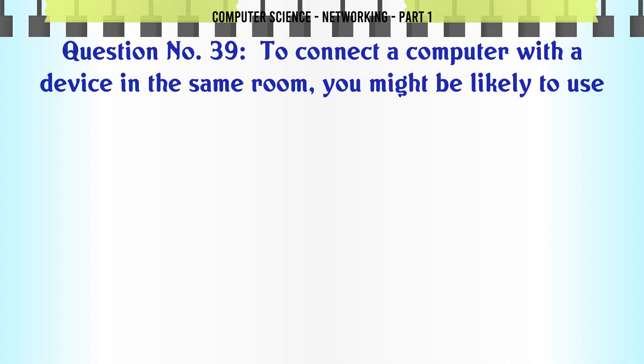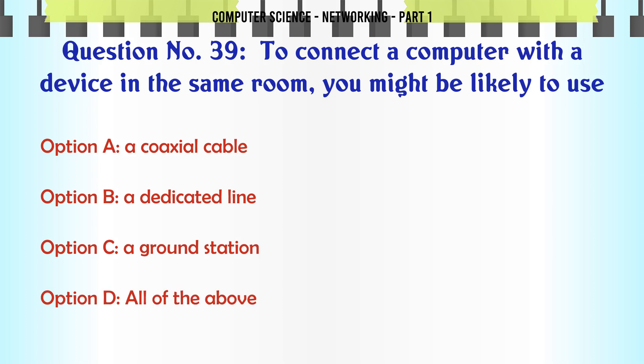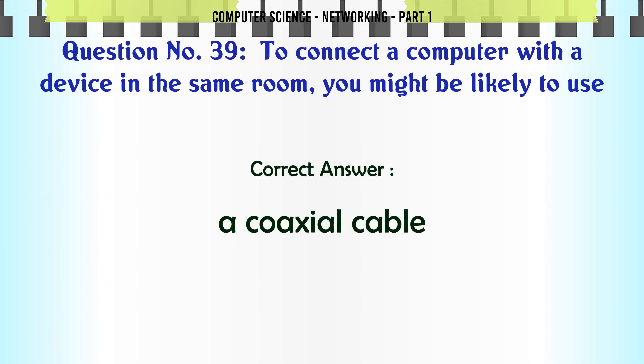To connect a computer with a device in the same room, you might connect the computer directly using: A. A coaxial cable. B. A dedicated line. C. A ground station. D. All of the above. The correct answer is: A coaxial cable.